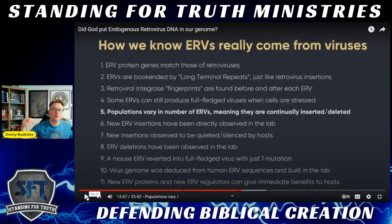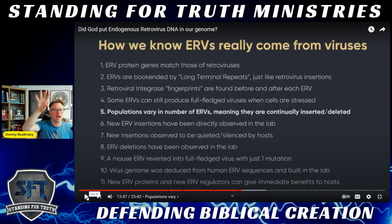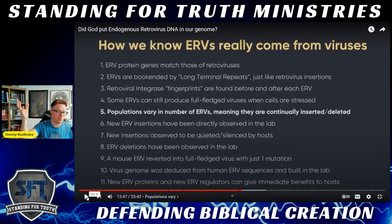We would look to allele frequencies to determine what is a designed allele versus a mutation. If it's a common allele, functional, beneficial, not disease-causing for the most part — it's probably created. If it occurs at really low frequency, like blue eyes — occurring in a small subset of the population, possibly a mutation that occurred after the Tower of Babel dispersal — we see the same principle with ERVs.